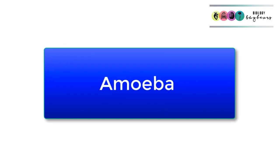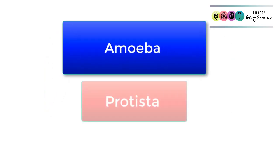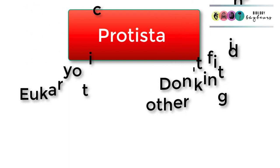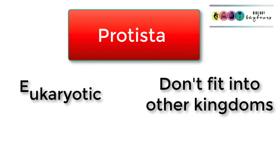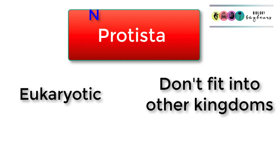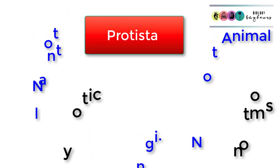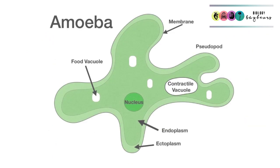This video covers amoeba specifically. It is one of those organisms that fits into the protista kingdom. The characteristics of protists are that they are eukaryotic and they don't fit into any of the other kingdoms — they're not fungi, they're not plants, and they're not animals. In our course, we study the amoeba, one of the most famous of the protists.